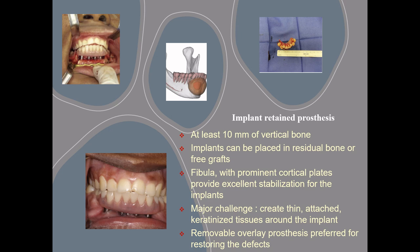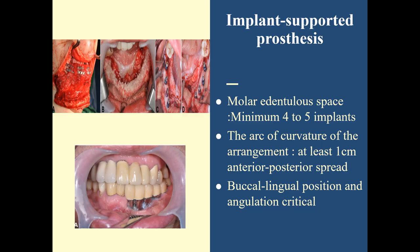If tissues are not thinned sufficiently, there is risk of deep peri-implant pockets predisposing to infection and peri-implantitis. Removable overlay prostheses are preferred for restoring anterior defects, with mastication support provided by implants anteriorly and residual dentition posteriorly. If the edentulous space extends into the molar region, a minimum of 4 to 5 implants must be placed. When bone sites are sufficient for longer implants, 13 mm or greater in length, only 2 implants are required to restore most defects.